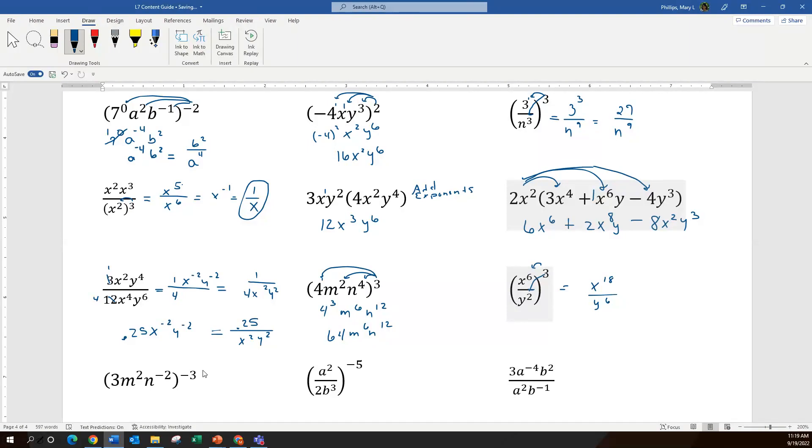For our next one, again, multiplying the exponent outside to all of the exponents inside, including the unwritten one that's on the number. We do the negative here, so that's going to be a tick more work, but let's multiply first. So I have 3 to the negative 3rd. I have m to the negative 6th, n to the positive 6th. So the next thing I do is rewrite.